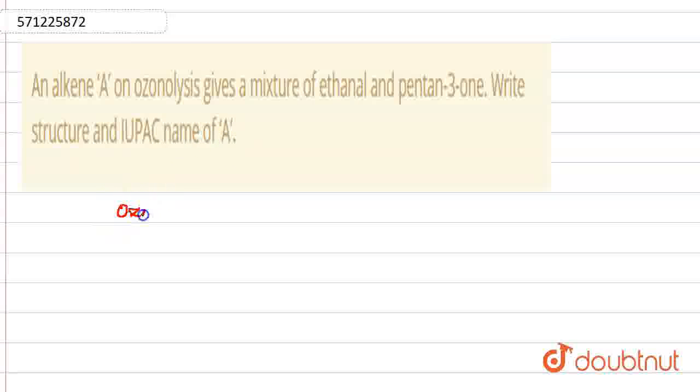So, first, what is ozonolysis? Ozonolysis is a type of reaction in which ozone is added into alkene or alkyne groups. And this ozone will help in formation of aldehyde or ketonic groups.